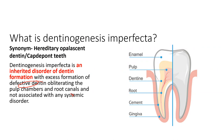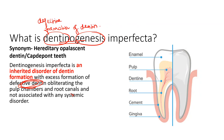Dentinogenesis means formation of dentin, so there is defective formation of dentin. In this diagram, the first layer is the enamel, followed by the dentin, followed by the innermost layer which is the pulp. In this disease, defective dentin completely obliterates the pulp chamber. The second key point is that it obliterates the pulp chamber.